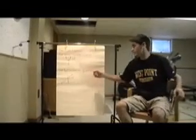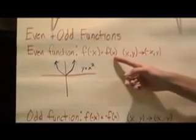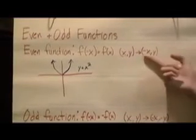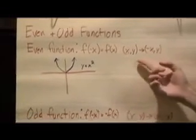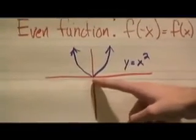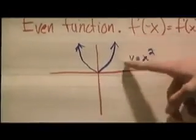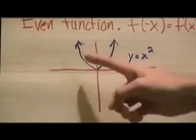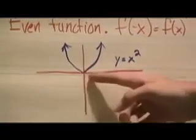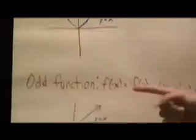Next, we're going to talk about even and odd functions. For even functions, an even function is a function where f of negative x is the same thing as f of x. So for every point x, y, you have another point that has the same y with the opposite x value. For example, y equals x squared would be an even function, because on the right side of the y-axis you have this line, and if you flip it over the y-axis, you have the same line going the other way. So a point like (1, 1) would correspond to (negative 1, 1) — you have the same points on each side of the y-axis.